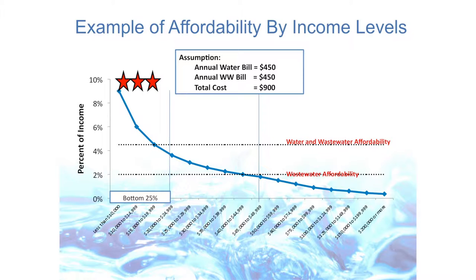In addition, where that system ends, there are local distribution systems — pipes, reservoirs, pump stations — to get the water all the way to the tap in a home or business. Billions of dollars of investment, and billions more if it were to be replaced today. What that means for the economics is we have a lot of fixed costs in the system, both in that investment and in the cost simply to maintain and operate it.